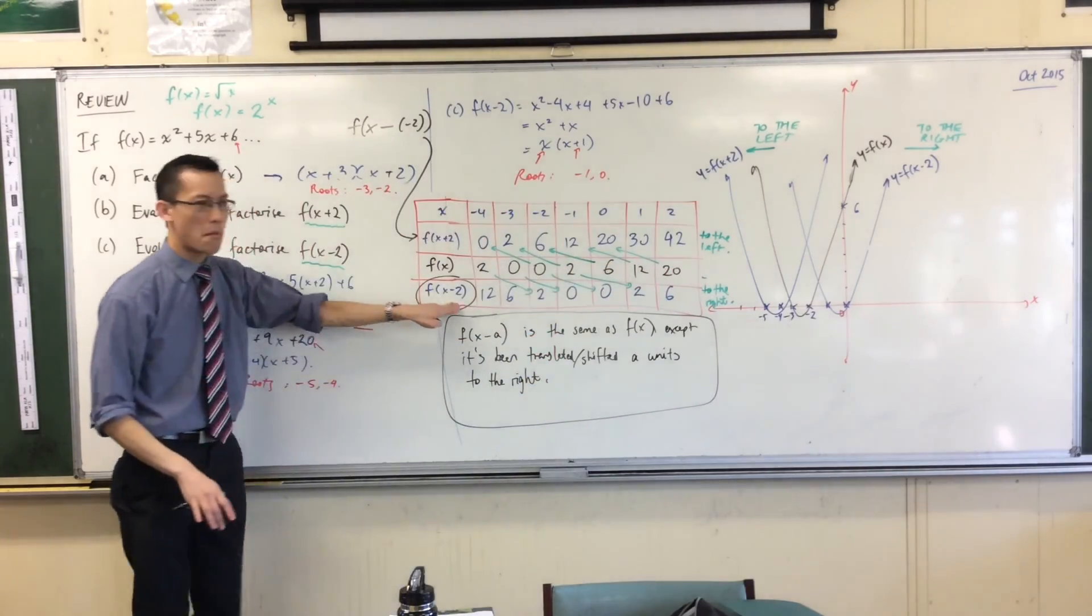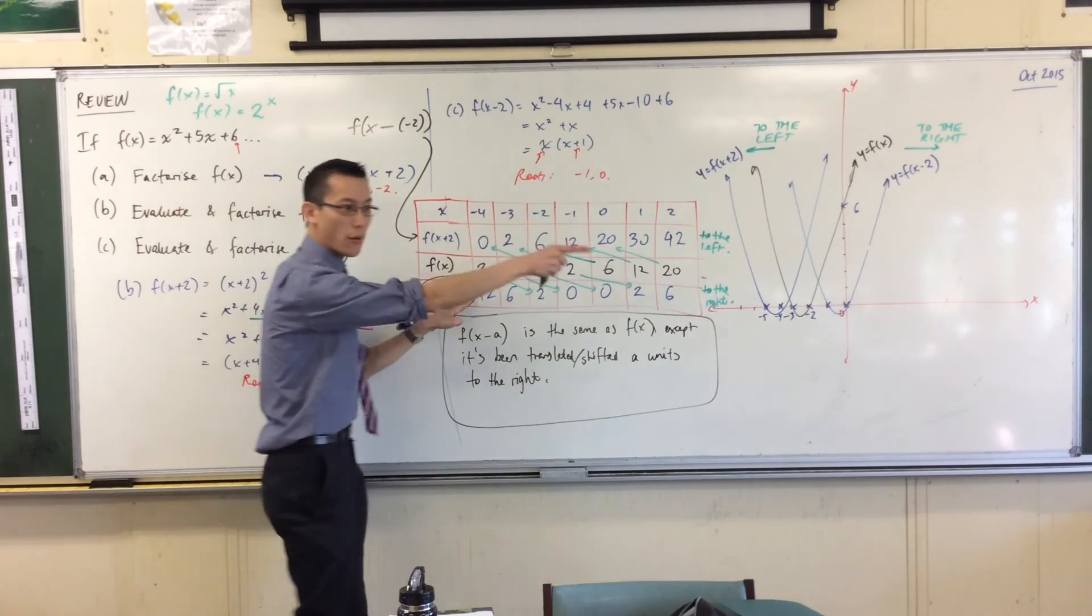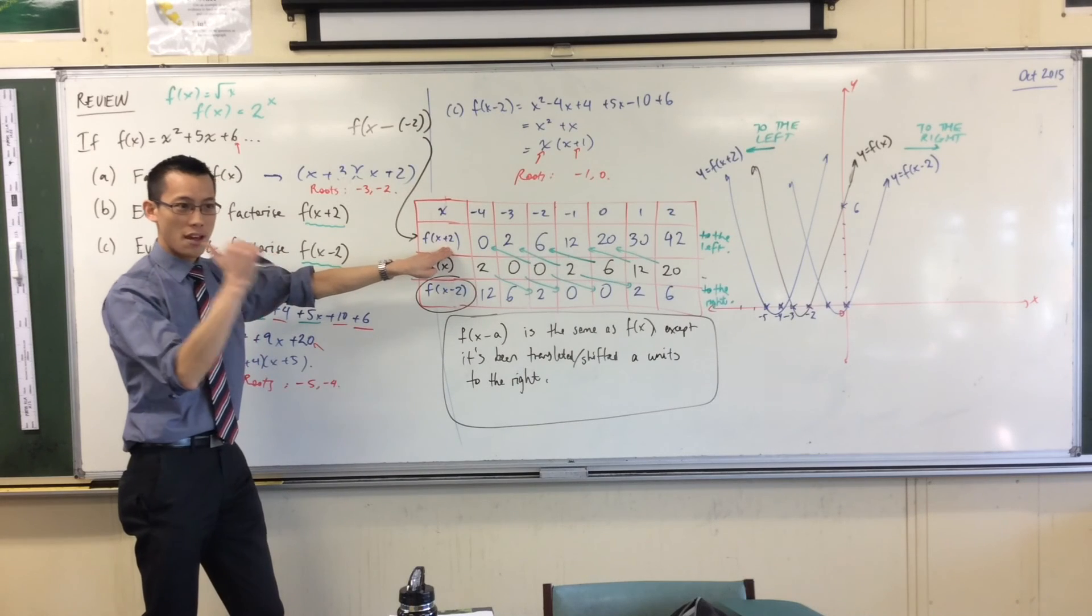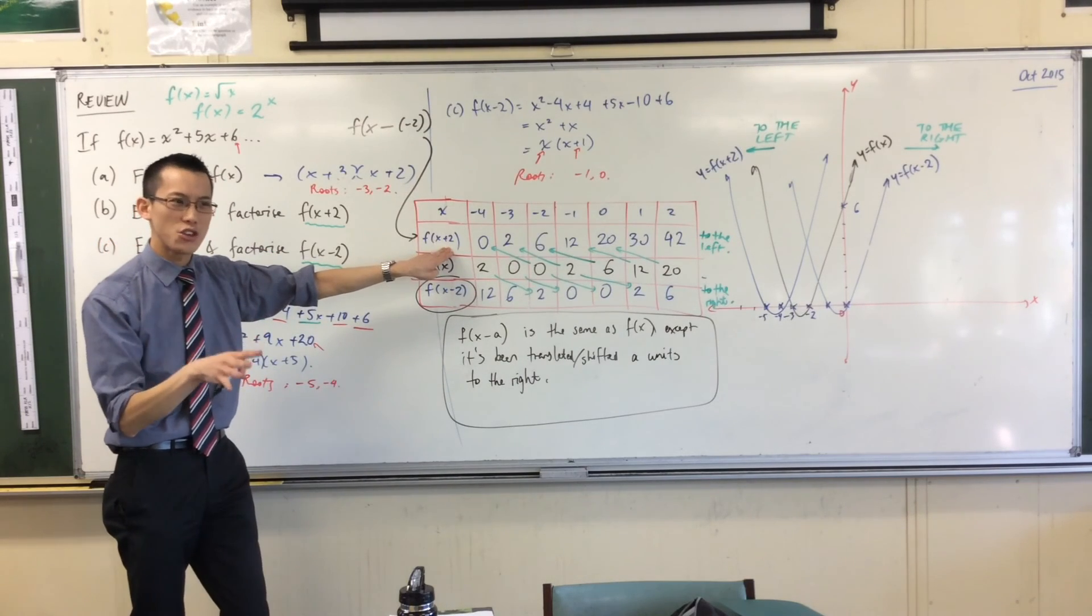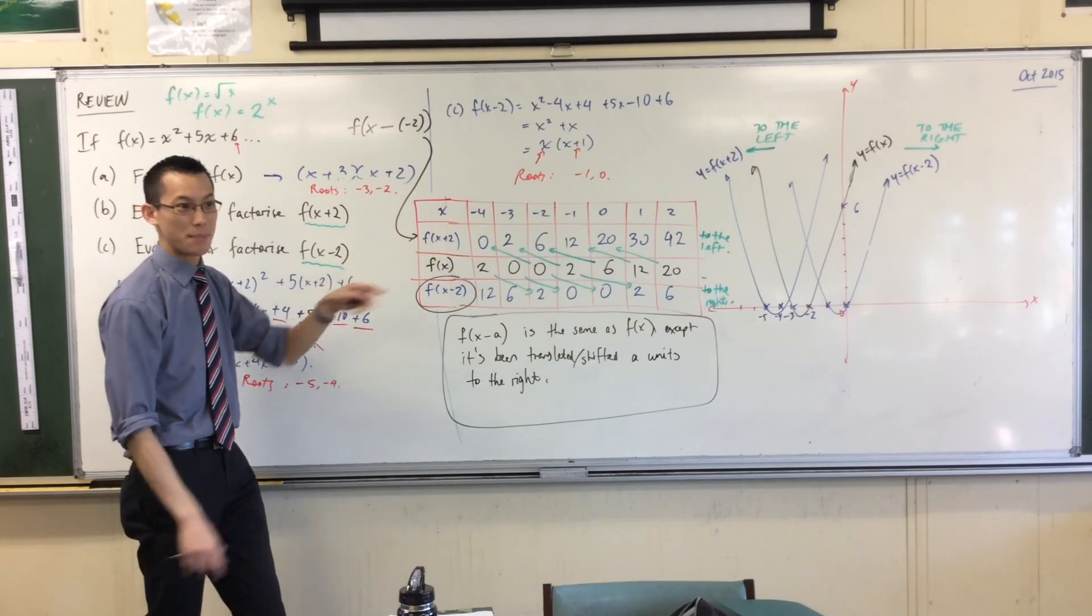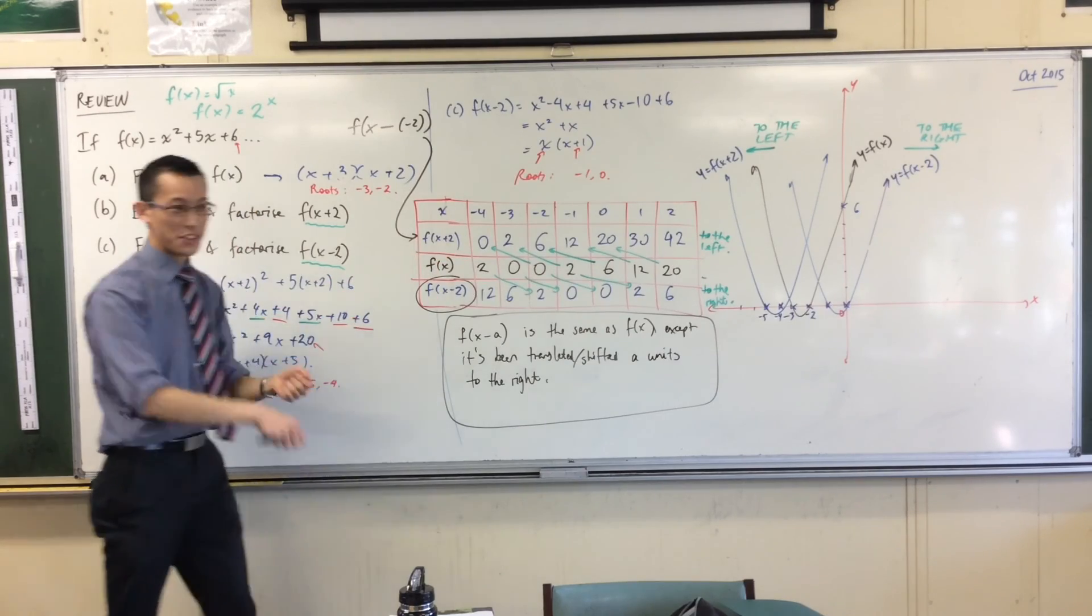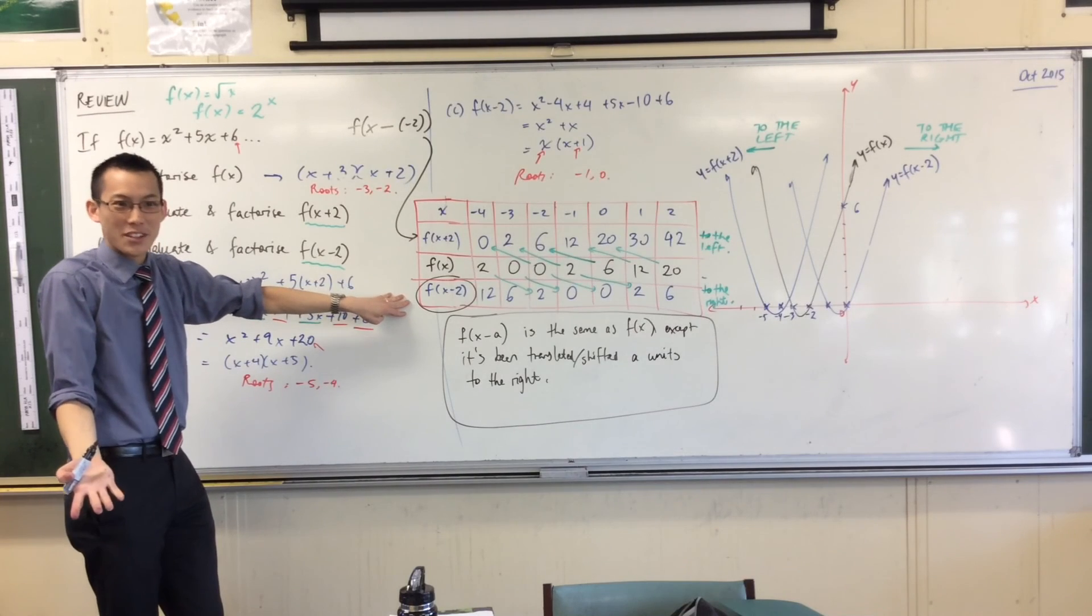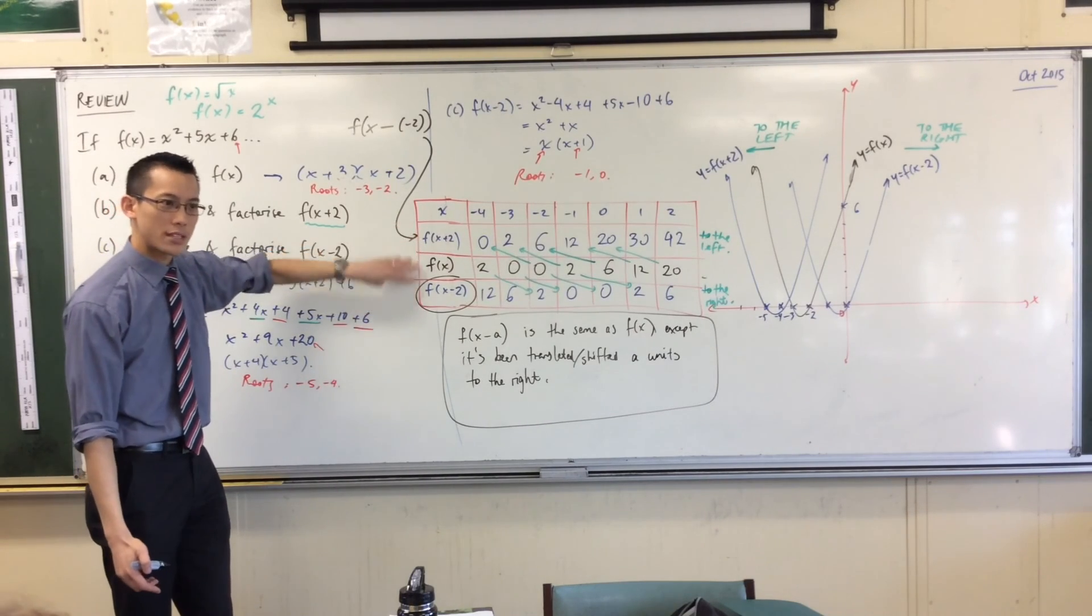When you see this x minus something, it means go that way. If you see x plus something, it means go that way. The opposite the way that you would think. Okay? For those of you who are learning to drive, it's a bit like when you're reversing. Okay? And you turn the wheel the opposite way you're supposed to, because that's the way the car is going to go. Alright? And it's the same with these functions.